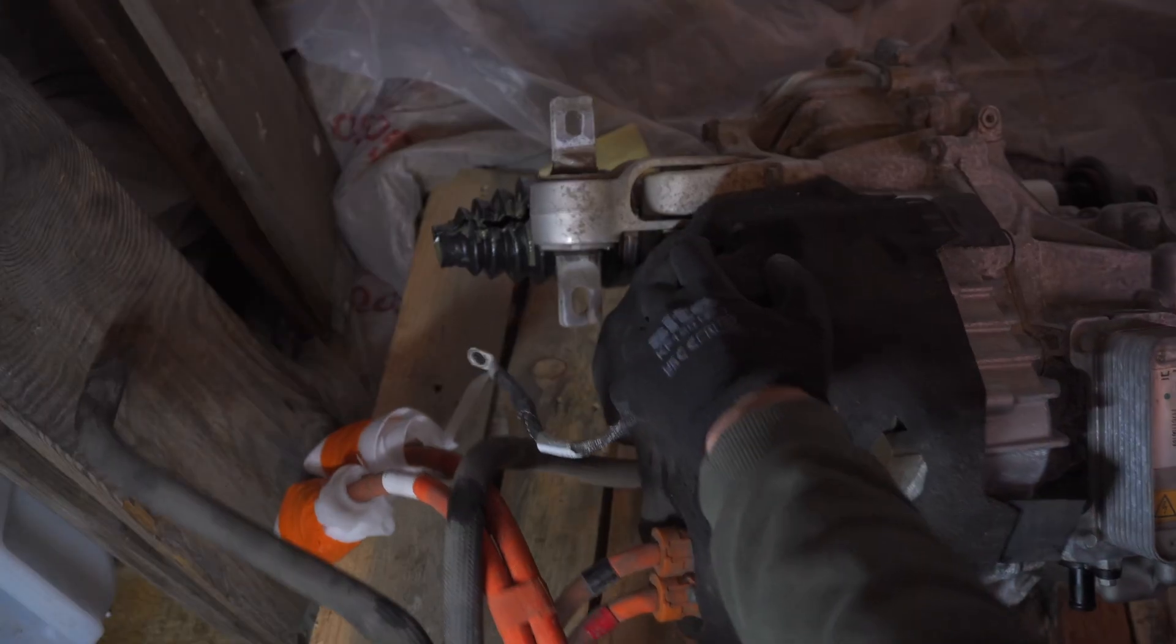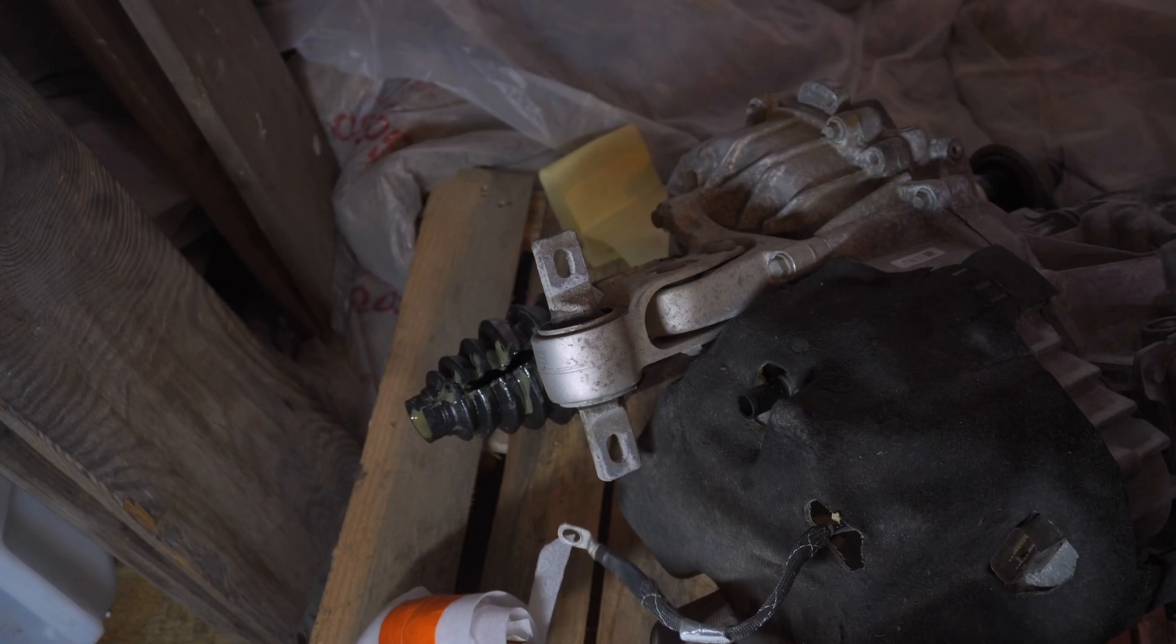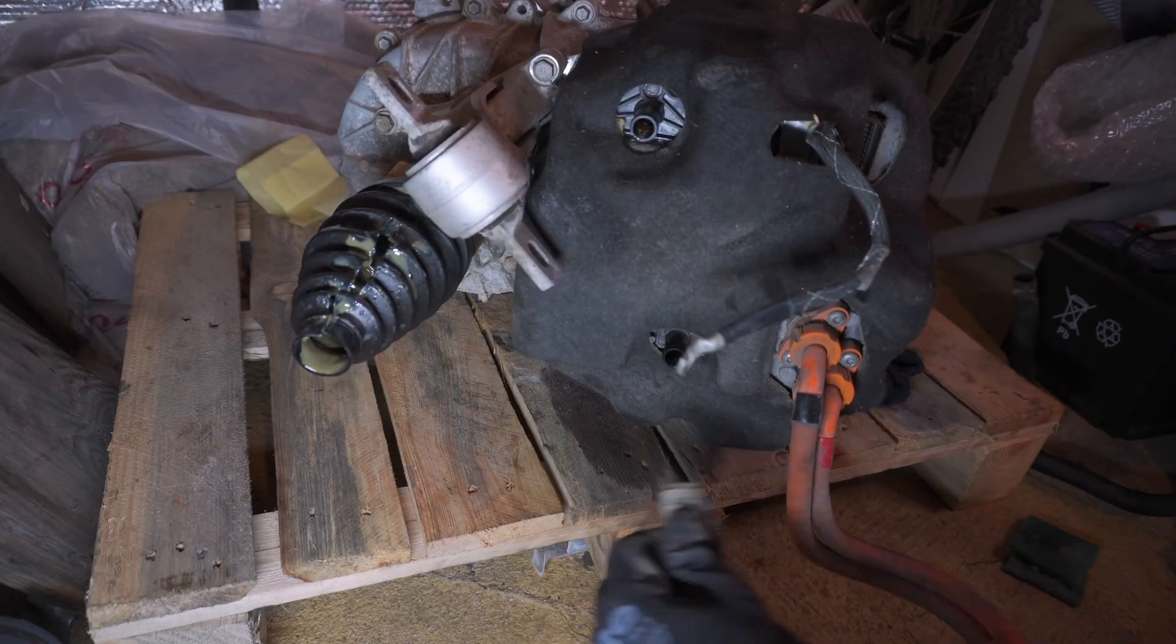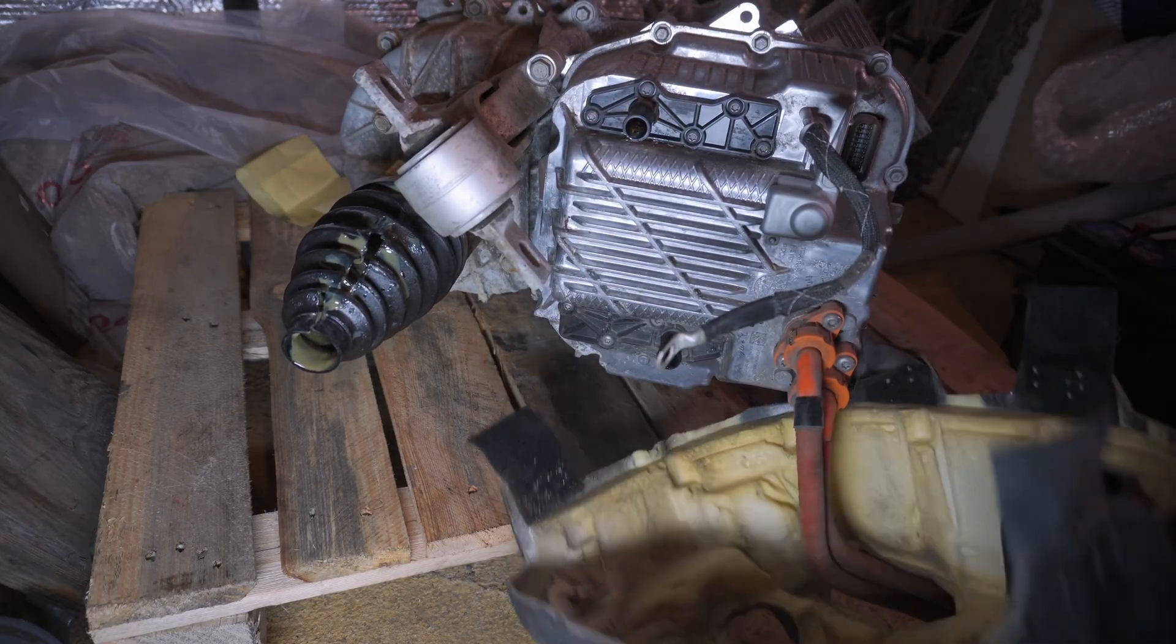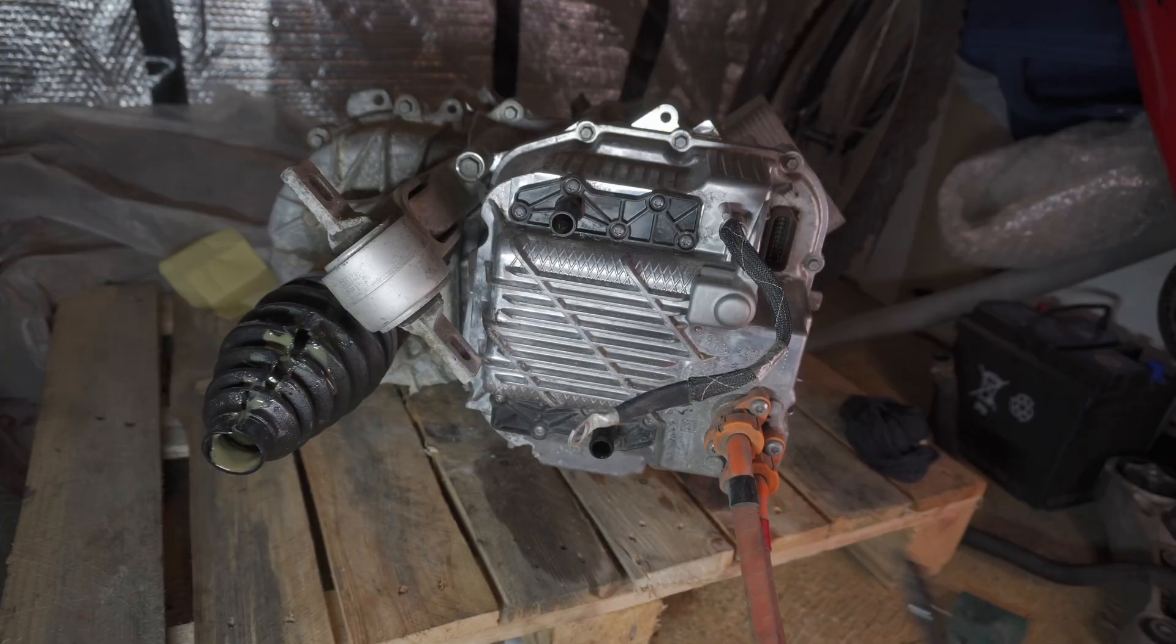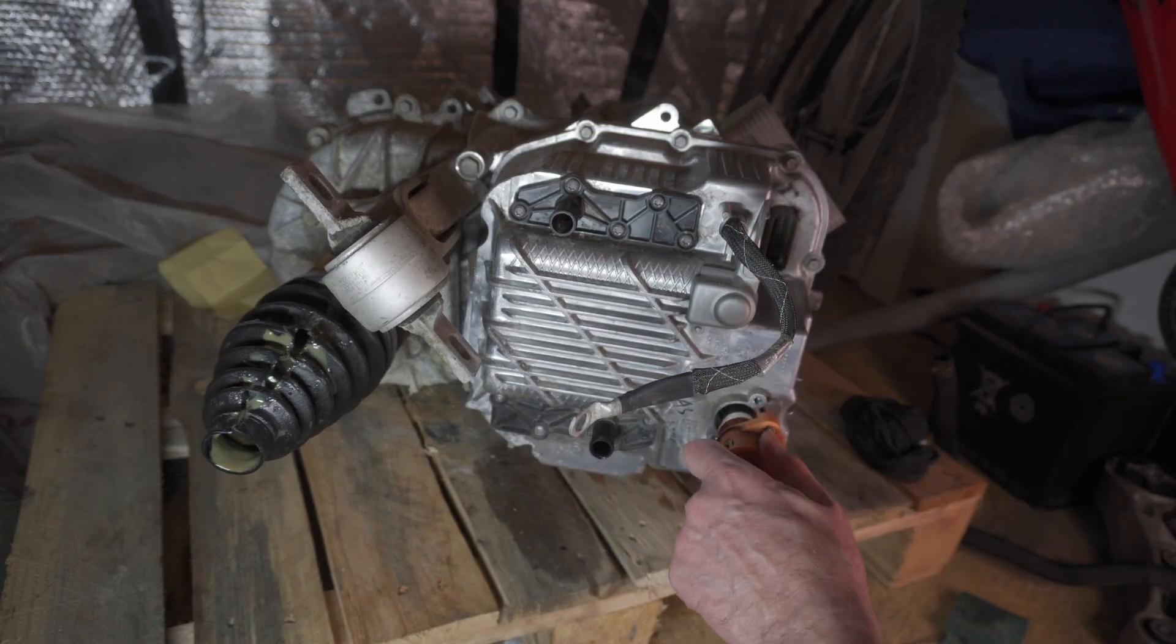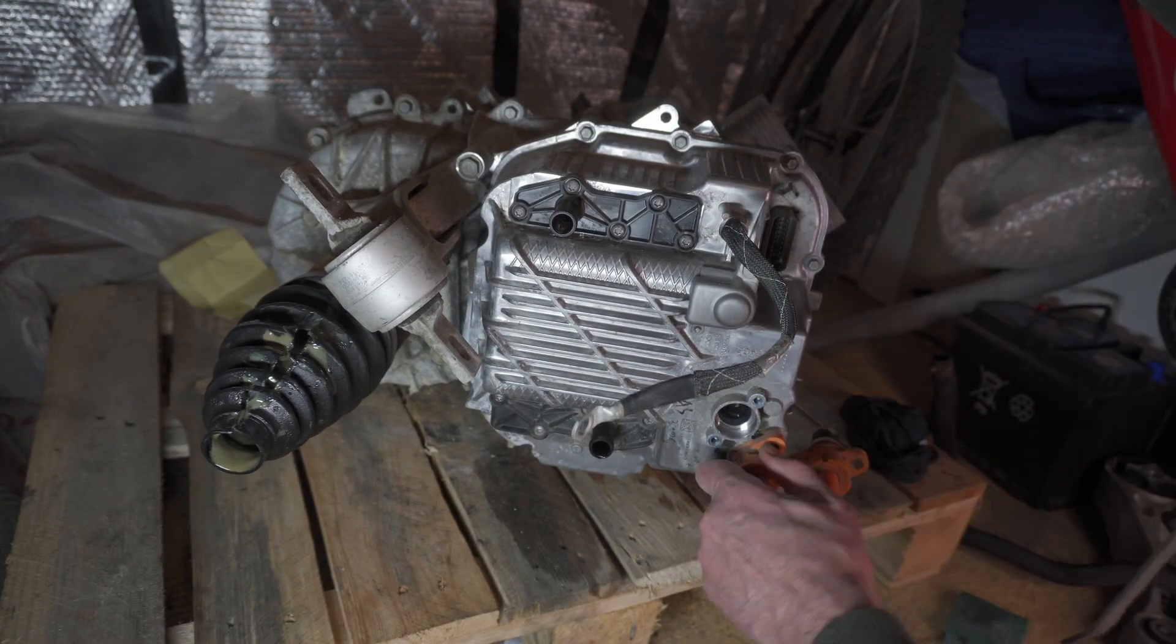My goal for this task is to remove the Tesla inverter cover. But to gain access to the cover, I first will need to remove the cooling pipes and the black foam cover that isolates the inverter top. I also decided to remove high voltage cables to make my life easier later on.